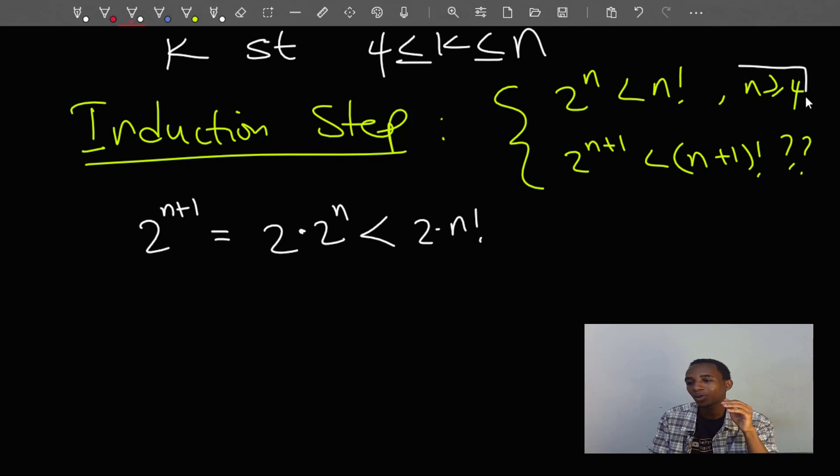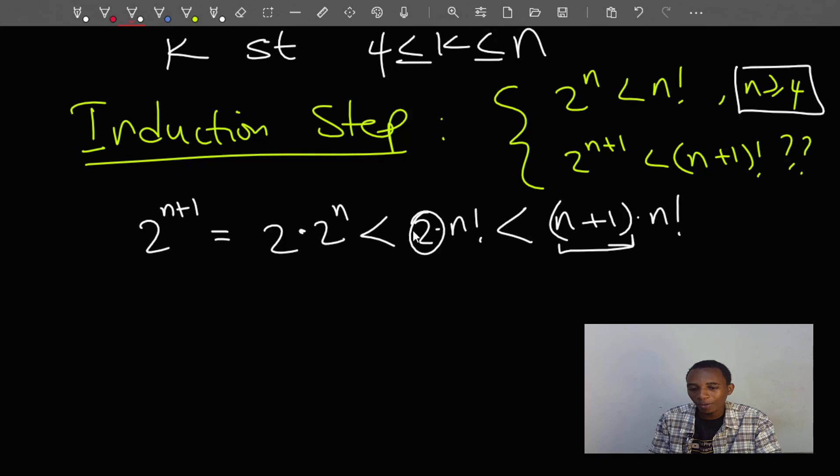So this should be less than n plus 1 times n factorial. As you can see, if I compare n plus 1 with 2, n plus 1 is always going to be greater than 2 because n is greater than or equal to 4. So the least value this can be is 4 plus 1, which is 5.